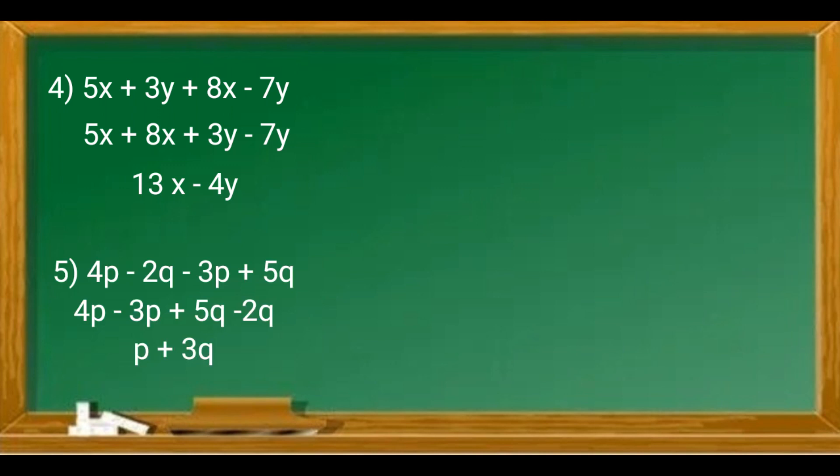Example 5: 4p - 2q - 3p + 5q. We put all the p's together: 4p - 3p, and the q's together: 5q - 2q. 4 - 3 = 1 and 5 - 2 = 3.